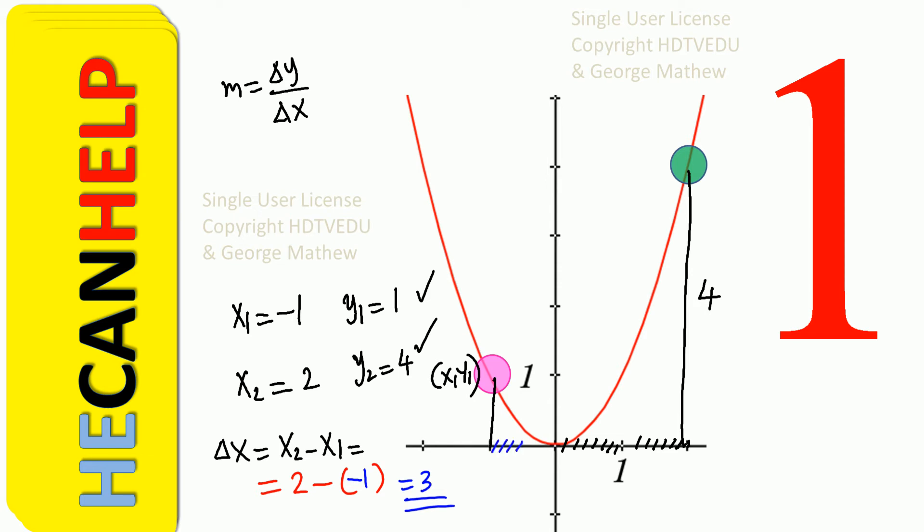And you agree, right? Change in x as you go from x equals negative 1 all the way to x equals positive 2. So that is delta x. And what is delta x? 3.